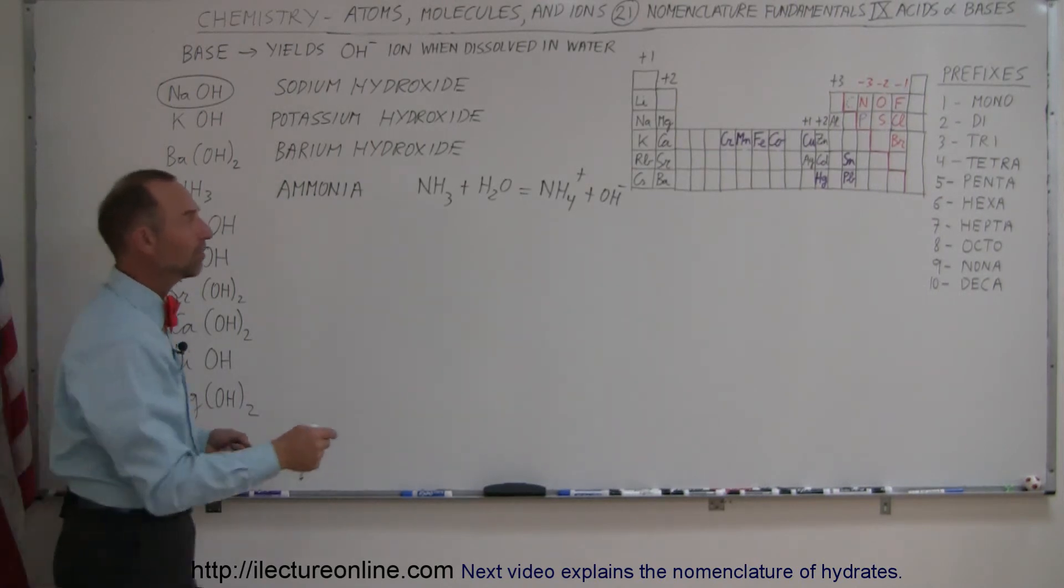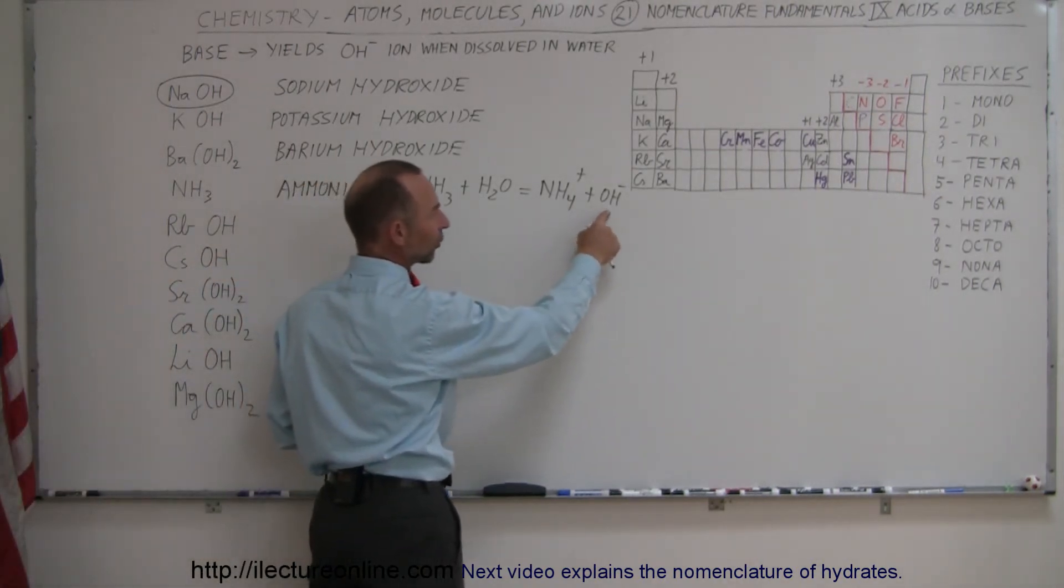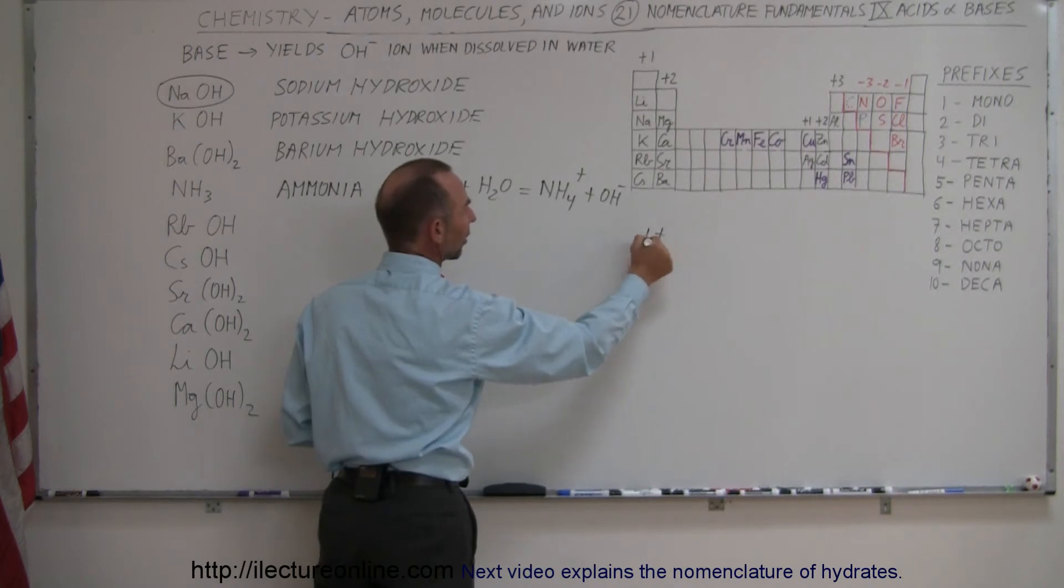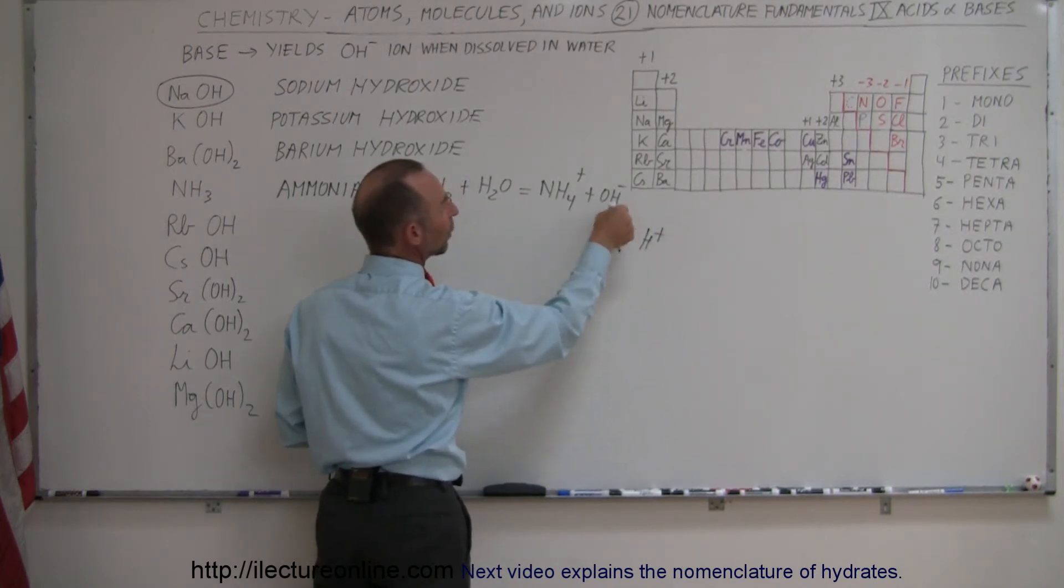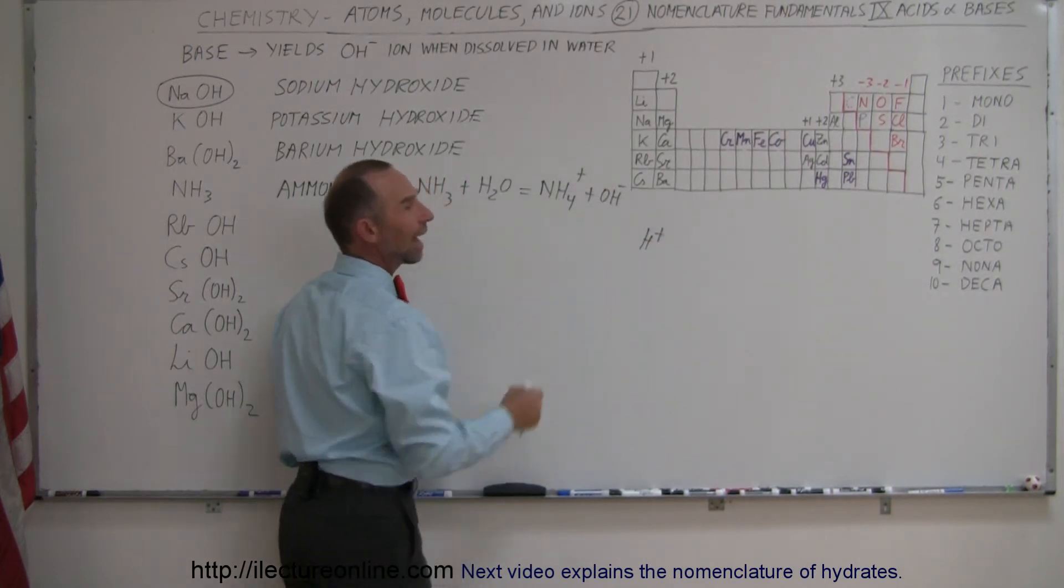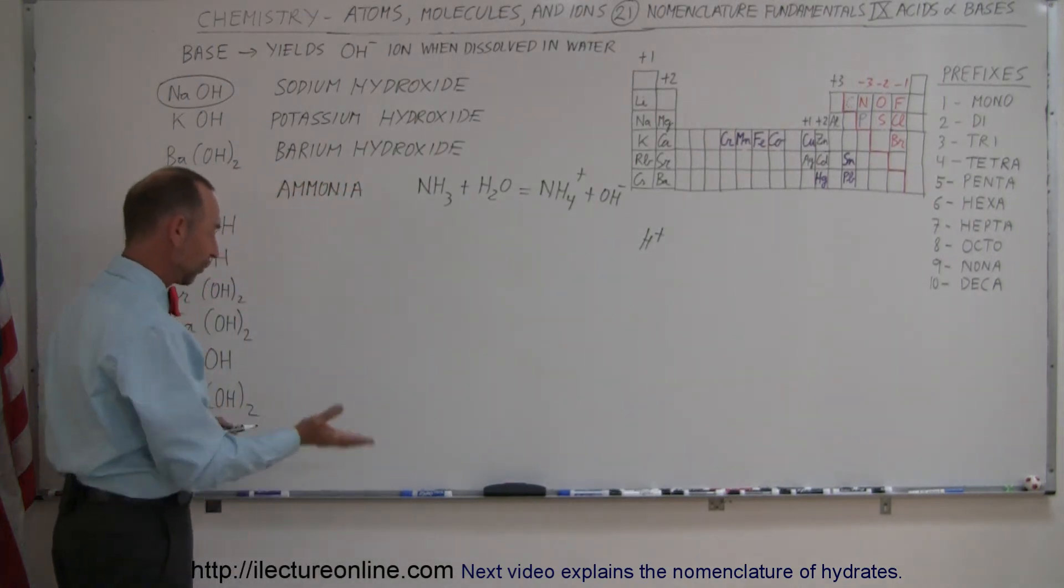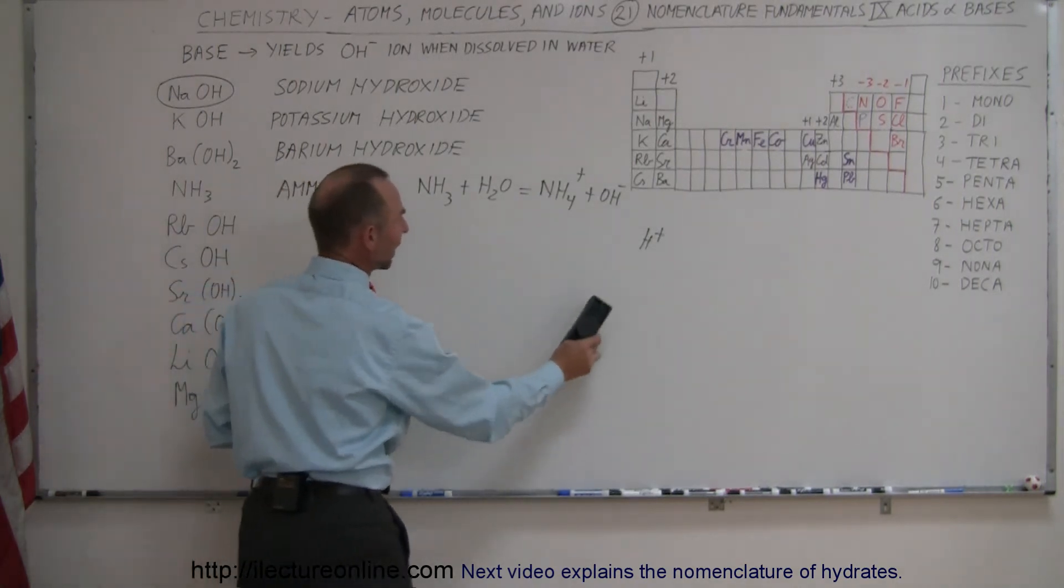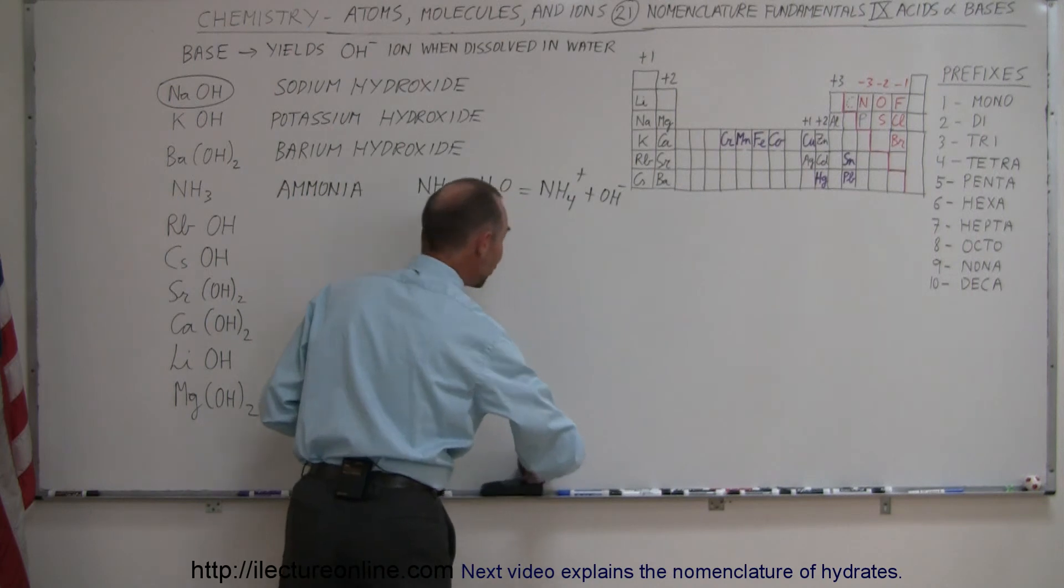The way the water is made more basic, the OH minus is then going to go find an H plus and join and make that water again, thus removing hydrogen ions from the water and therefore the pH will go up. But again, that is something for a future video.